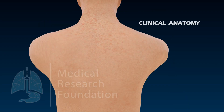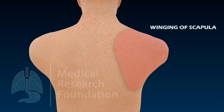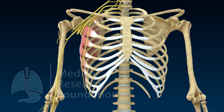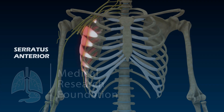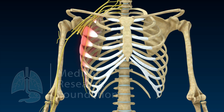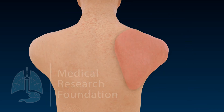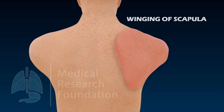Clinical anatomy: winging of scapula. Injury to the long thoracic nerve leads to paralysis of the serratus anterior muscle, resulting in elevation of the medial border of the scapula. This condition is known as winging of the scapula.